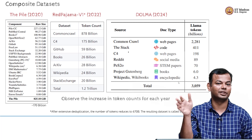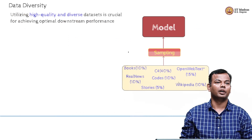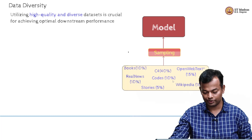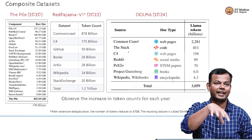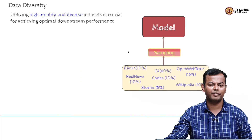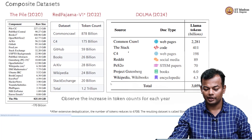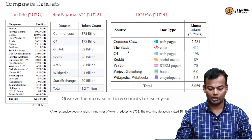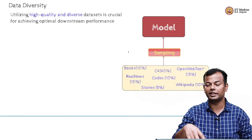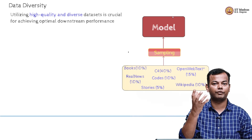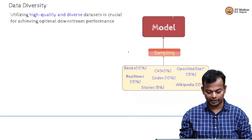Observe the increase in token count over the years. Data diversity is important — you have all these multiple sources in aggregate or composite datasets, and all of those sources may have different amounts of data. As you can see, the amount of Wikipedia content is very small compared to Common Crawl content or even the Stack content. So you want to mix these together, doing some sort of sampling from these different sources to feed data to the model.